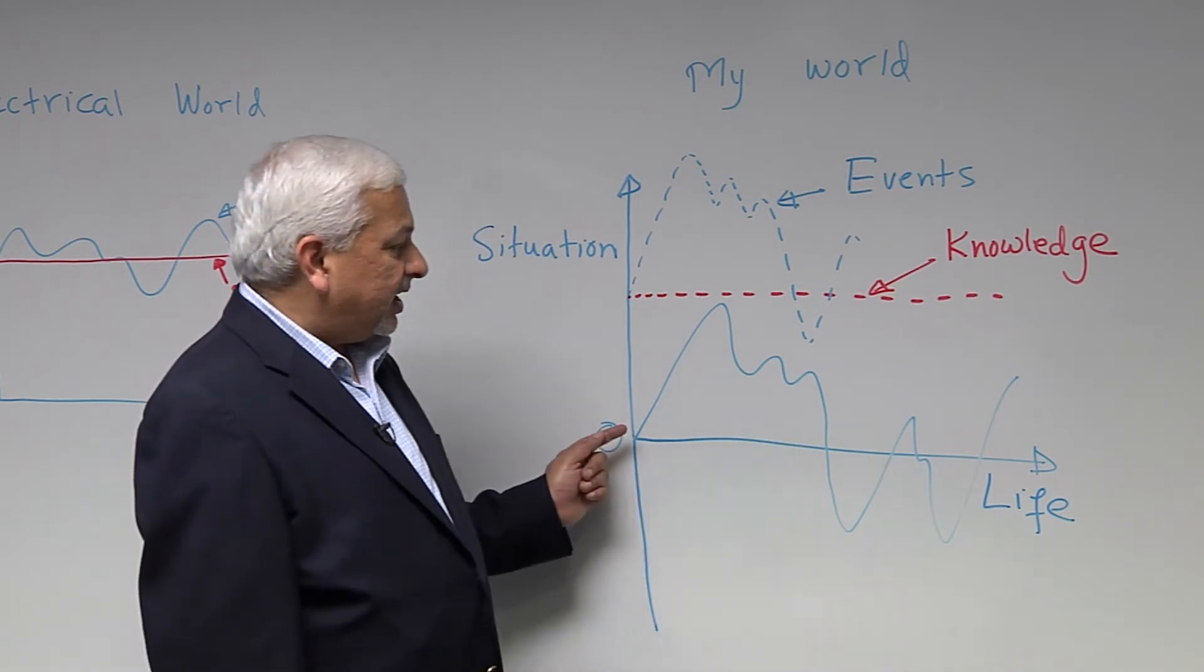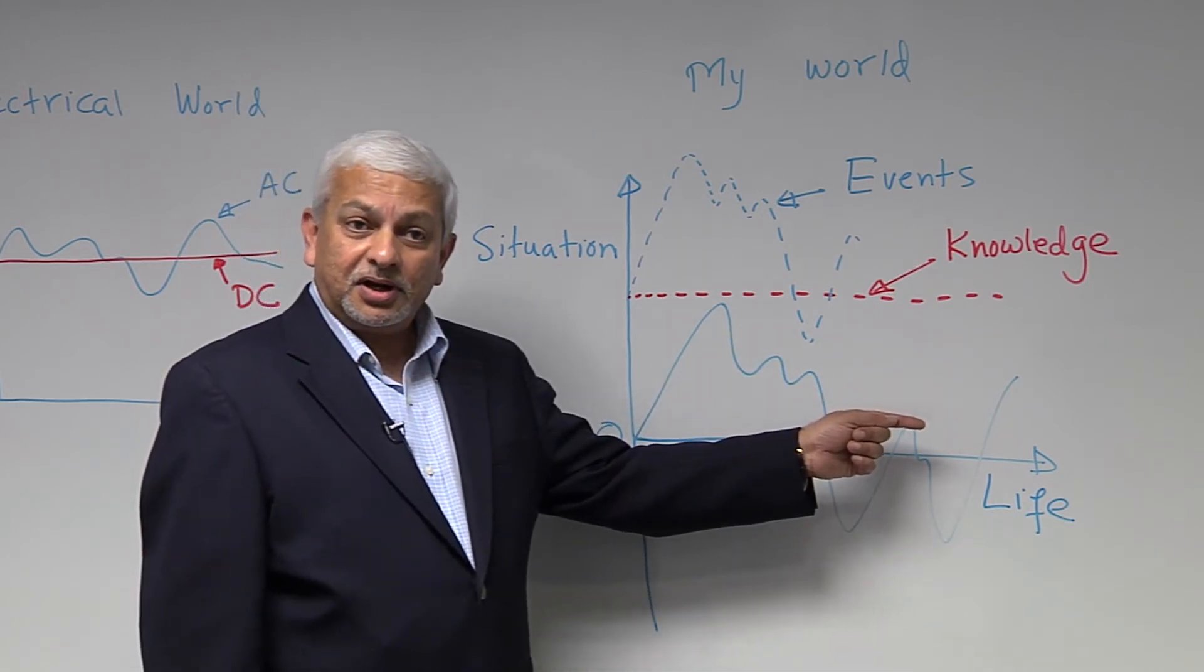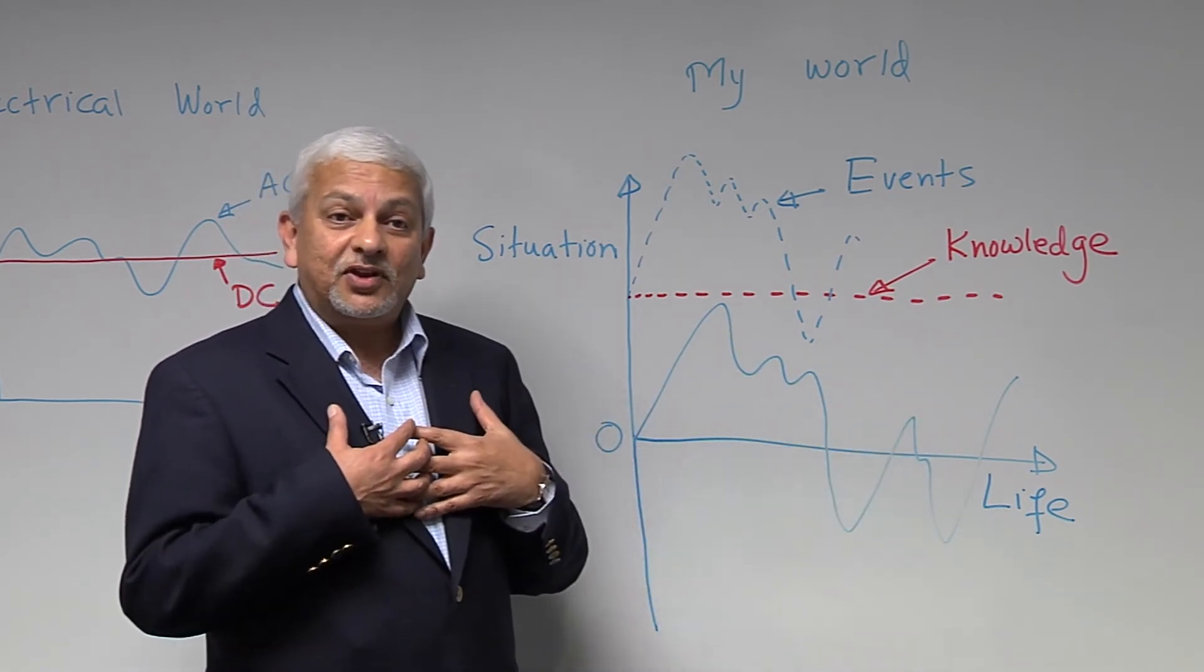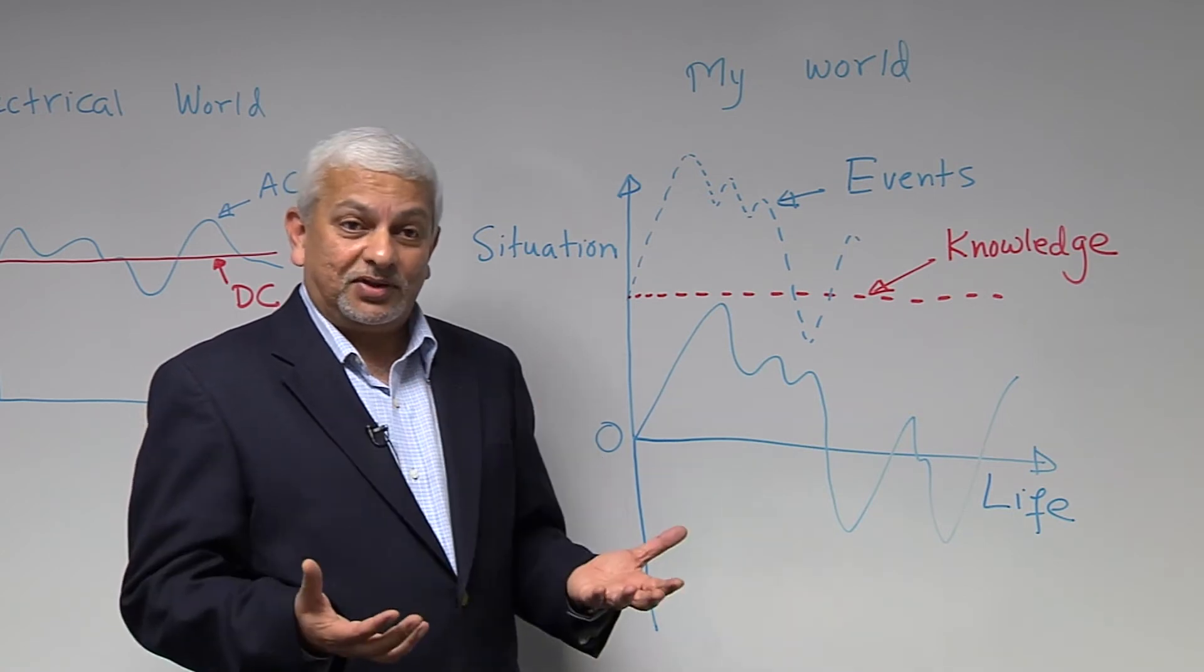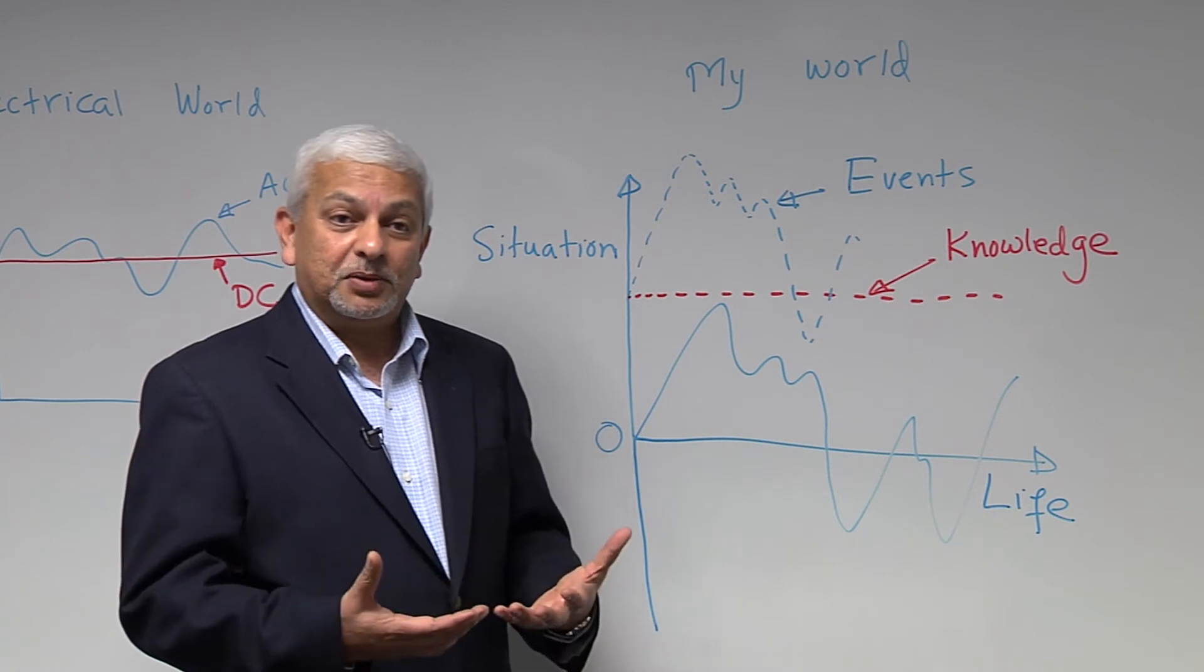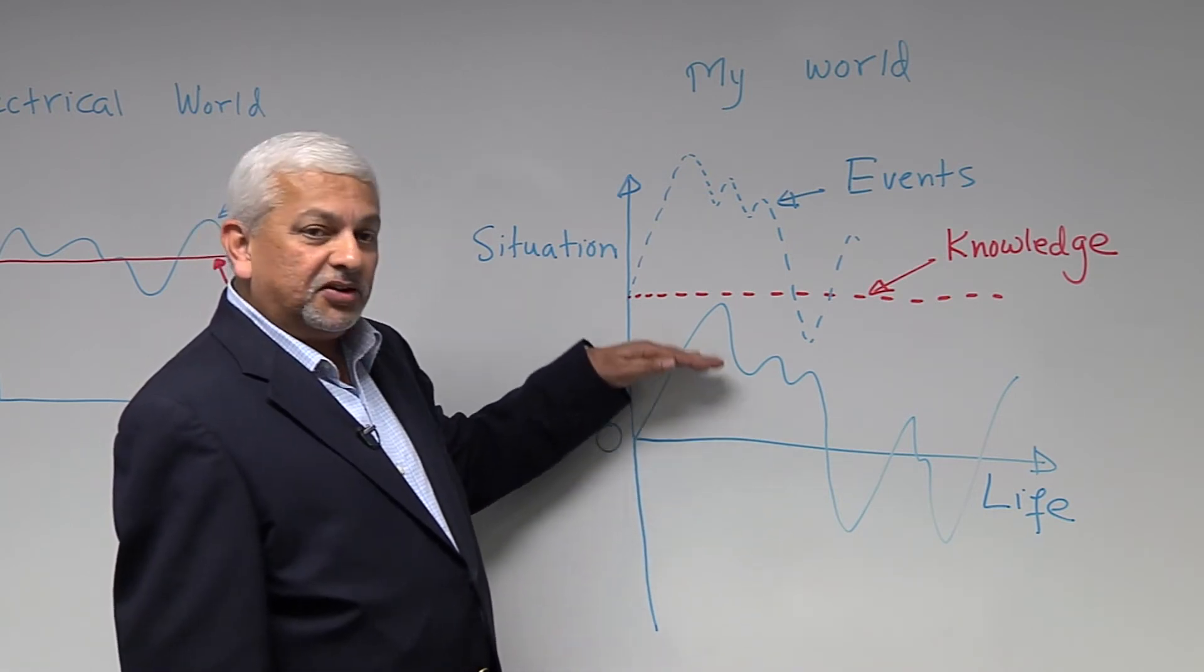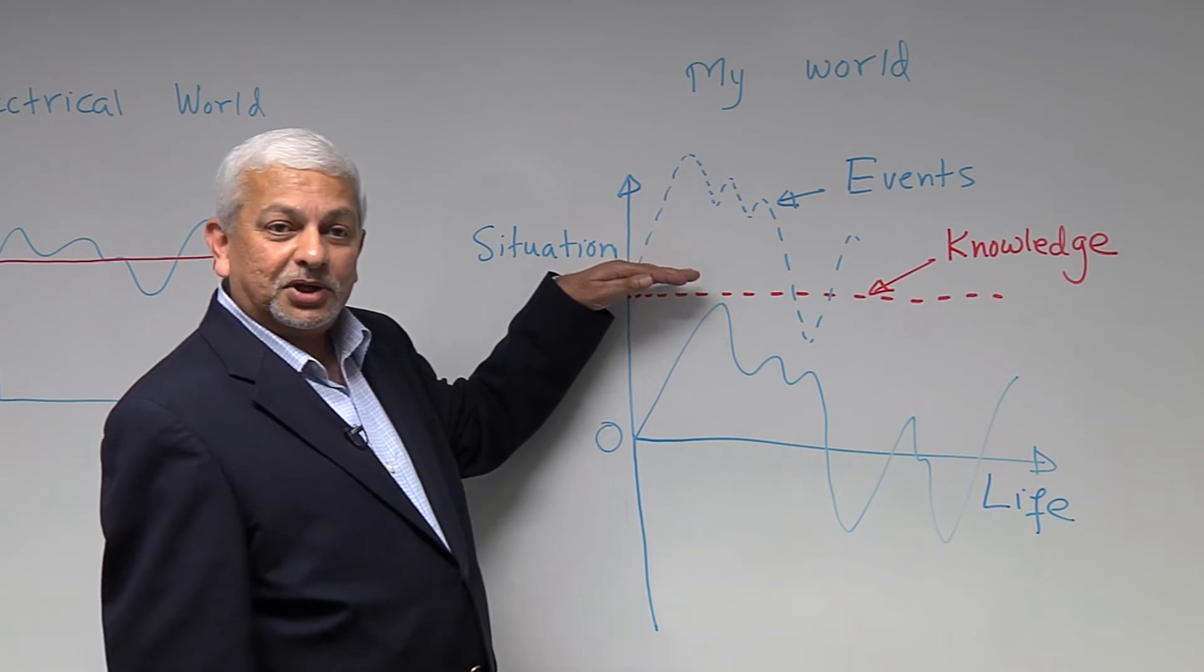So the question is, can things still go up and down in life, and yet I'm never sad and I'm always happy and in a good frame of mind even as things are going up and down? The answer to that is yes, of course. You have to increase the average value, so to speak.